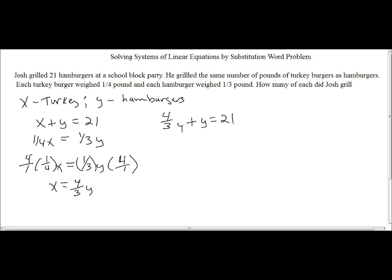Now we need to do is literally just clear this fraction again, and we do so by multiplying everything by 3. So that's going to give me 4y plus 3y equals 63.